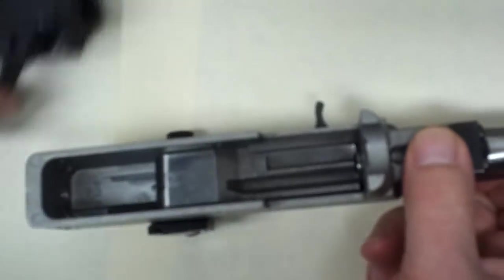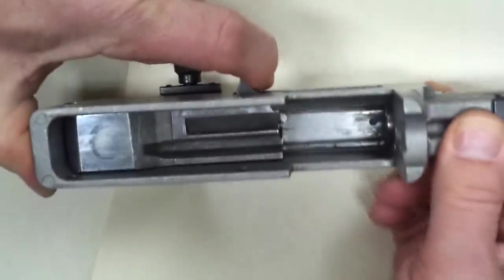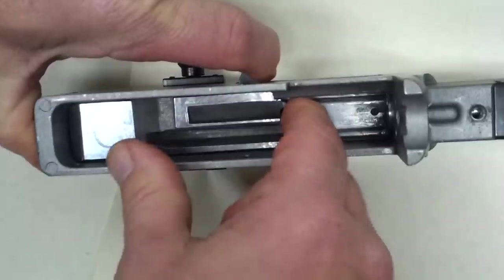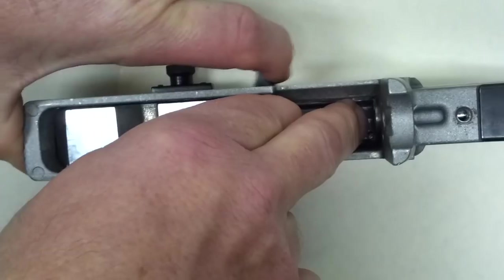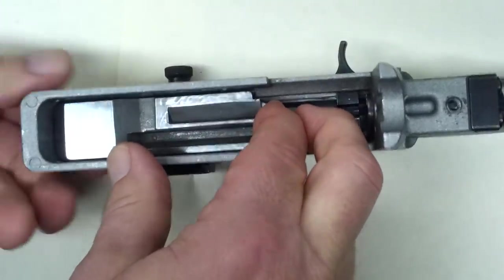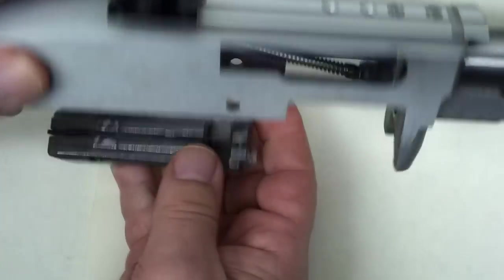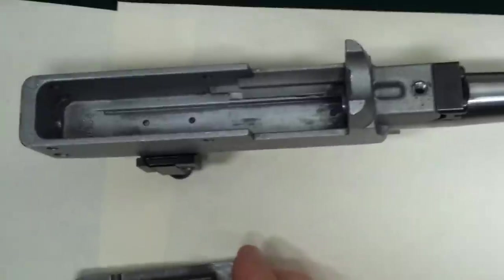Now to remove the bolt, we're going to pull it all the way back, past where the bolt stop would have stopped it, lift up the front, push down with our other finger on the guide rod, and let the bolt handle go forward. This removes the bolt handle from the bolt, so when I turn it over, the bolt easily drops out, and the guide rod comes out the ejection port.